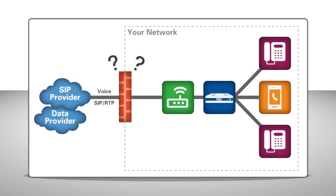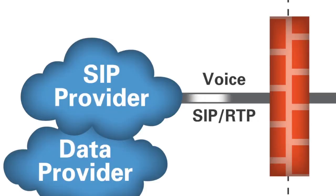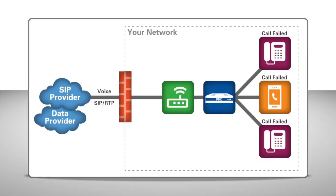There's just one problem with this setup. Your firewall doesn't really get SIP. Calls just can't get passed — firewalls aren't designed to operate within VoIP frameworks. The number you have dialed is not in service at this time.